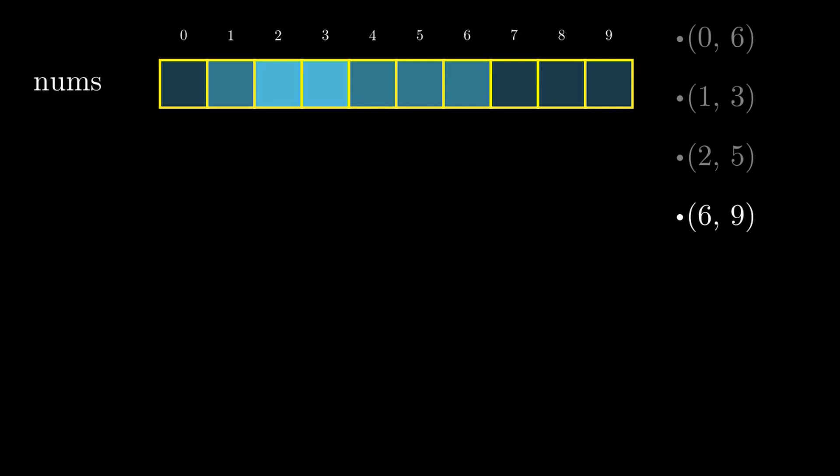It will contribute its value to a lot of requests. Here, the brightness of the square is proportional to the number of requests in which that square occurs. So the brighter the square, the more requests it occurs in and the more it contributes to the sum.